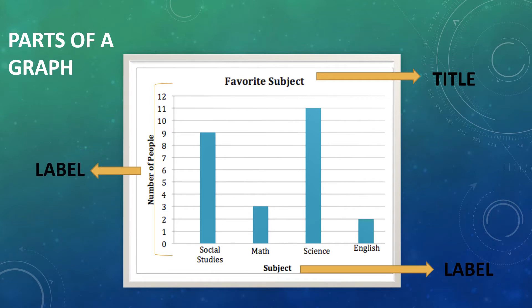Before we begin with labels, let us know that there are two axes which help us to present our information through a bar graph. First is the x-axis, and second is the y-axis.